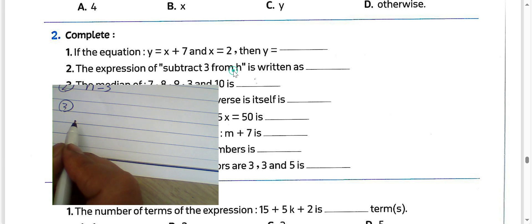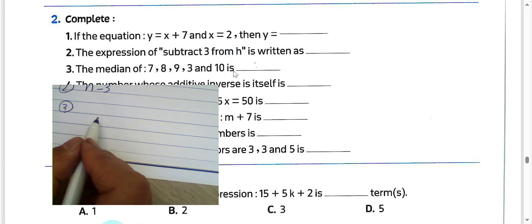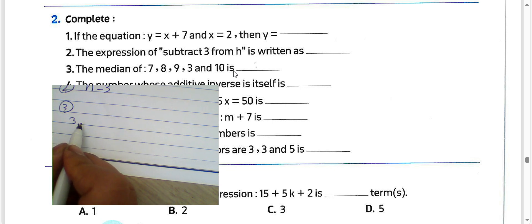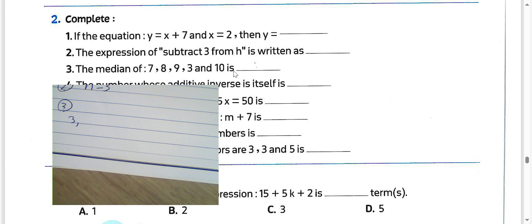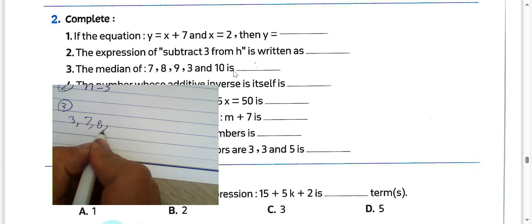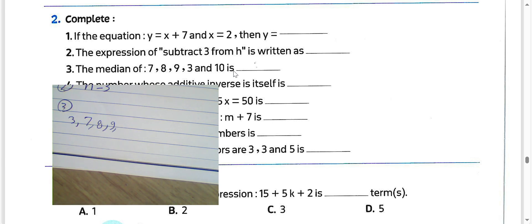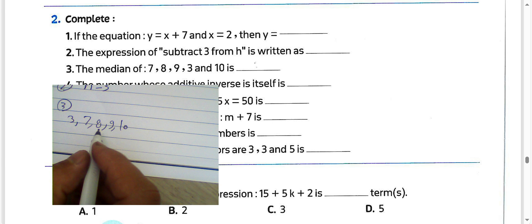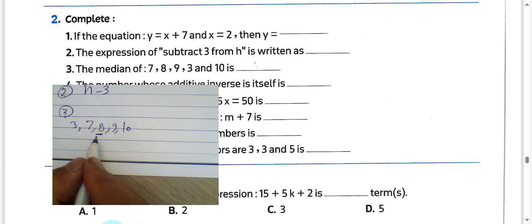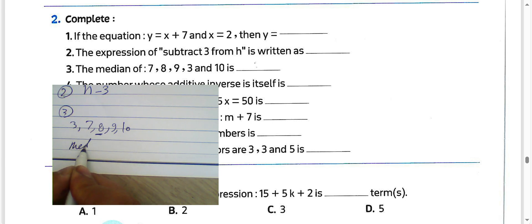Question number 3: the median of the numbers 7, 8, 9, 3, 10. First, we must arrange all numbers in ascending or descending order. Arranged: 3, 7, 8, 9, 10. Then 8 will be the median — it lies in the middle. We have 5 numbers, so the median will be equal to 8.